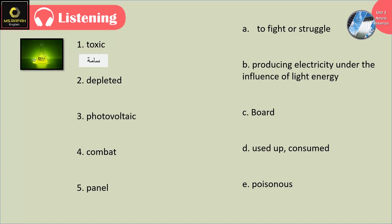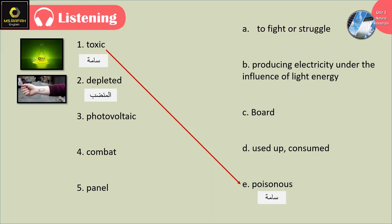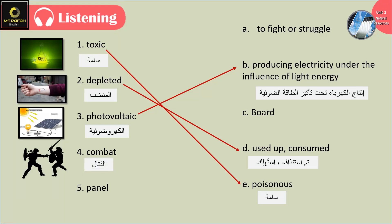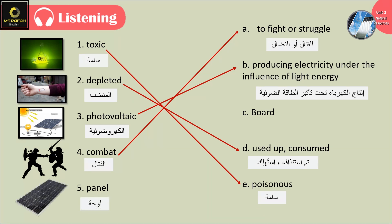Toxic: poisonous. Depleted: used up, consumed. Photovoltaic: producing electricity under the influence of light energy. Combat: to fight or struggle. Panel: board.